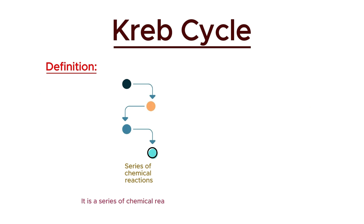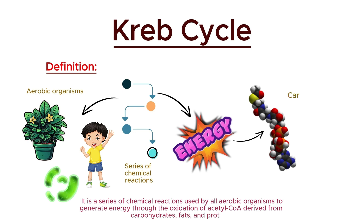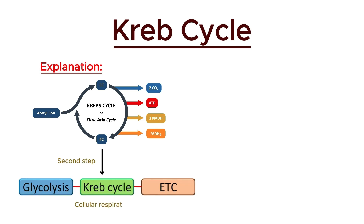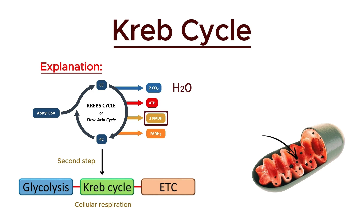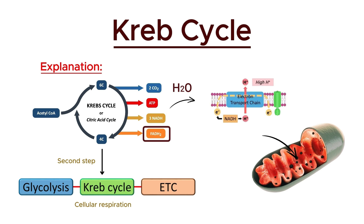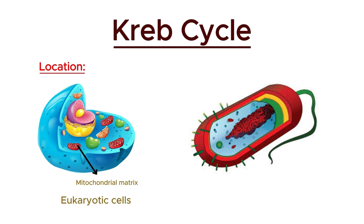It is a series of chemical reactions used by all aerobic organisms to generate energy through the oxidation of acetyl-CoA derived from carbohydrates, fats, and proteins. This cycle is a crucial part of cellular respiration that takes place in the mitochondria, where enzymes facilitating the reactions are located. It involves the oxidation of acetyl-CoA to carbon dioxide and water, producing energy in the form of ATP and electron carriers NADH and FADH2, which enter the electron transport chain. The Krebs cycle occurs in the matrix of the mitochondria in eukaryotic cells and in the cytoplasm in prokaryotes, playing a key role in the cell's energy production and metabolic processes.